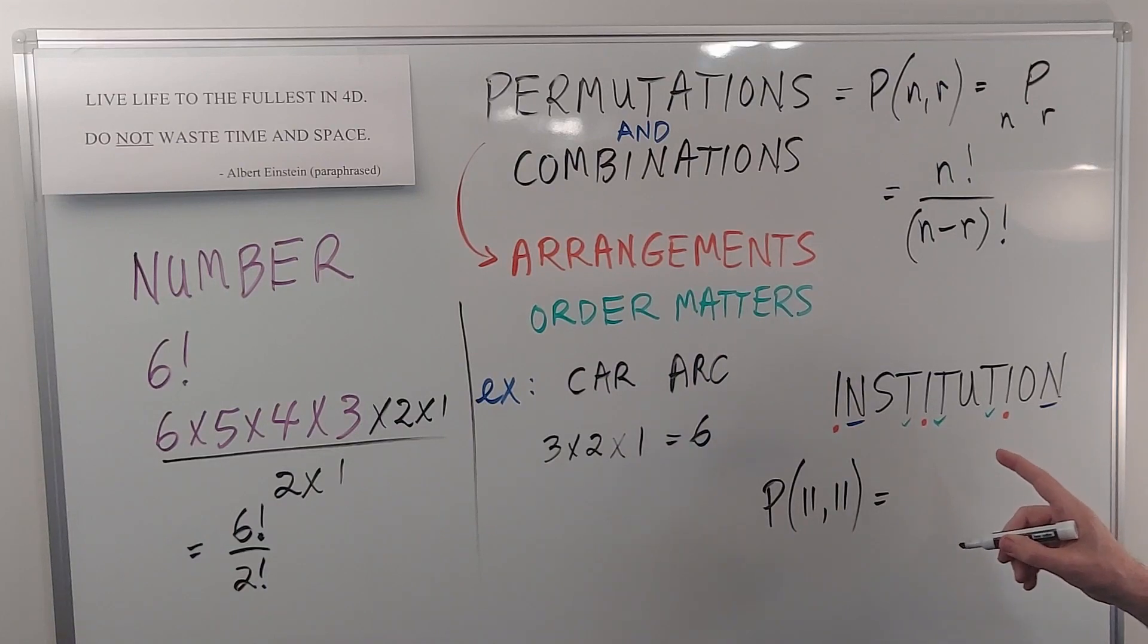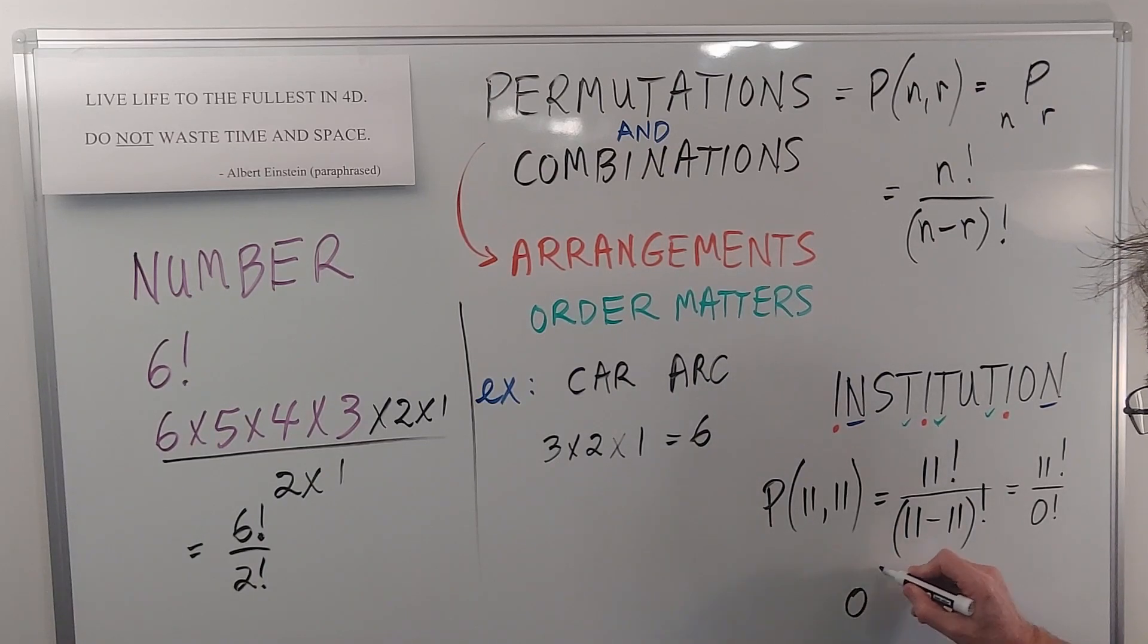So if I wanted to choose all of them, how many different arrangements are there? This is fundamentally different from NUMBER and CAR because of the letters that are the same. So generally it would be 11 factorial over 11 minus 11 factorial, or 11 factorial over 0 factorial. By the way, that would indicate that 0 factorial is equal to 1 for consistency.